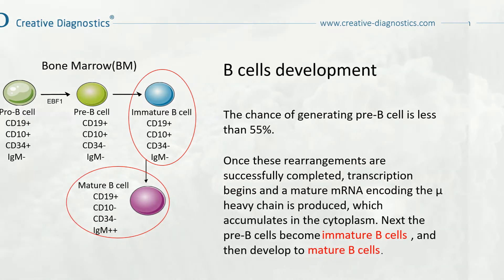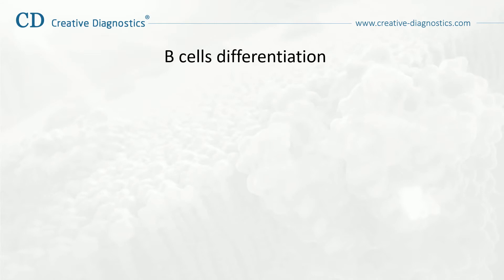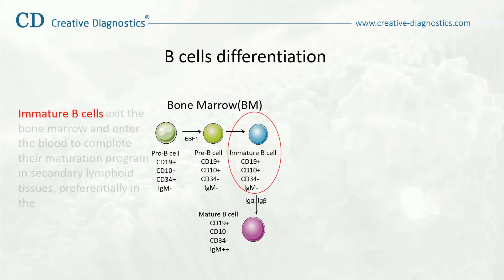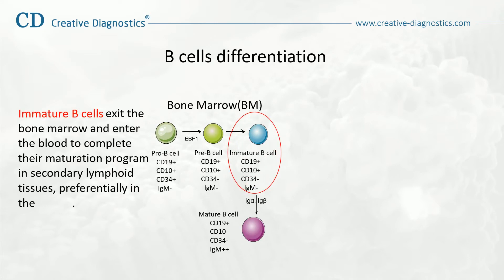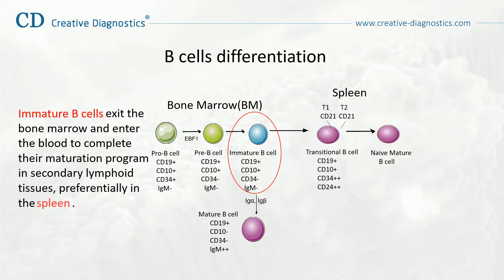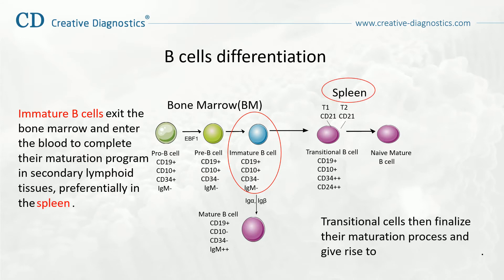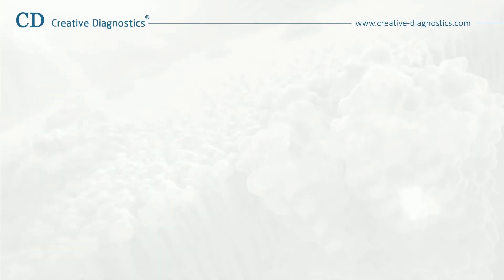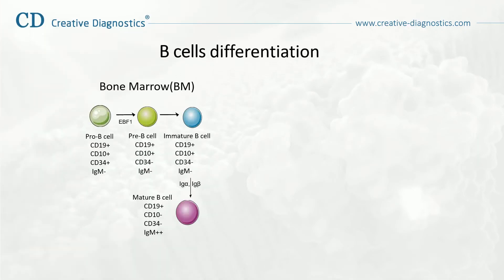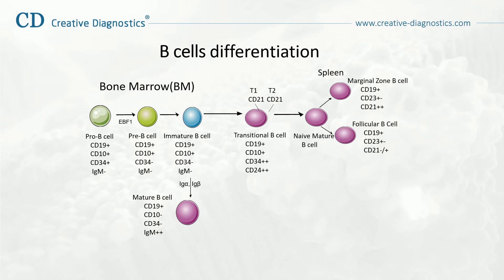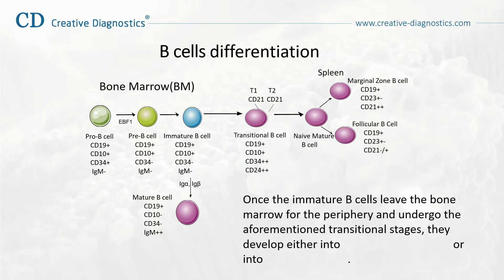Immature B-cells exit the bone marrow and enter the blood to complete their maturation program in secondary lymphoid tissues, preferentially in the spleen. Transitional cells then finalize their maturation process and give rise to naive mature B-cells. Once immature B-cells leave the bone marrow for the periphery and undergo these transitional stages, they develop either into marginal zone B-cells or into follicular B-cells.